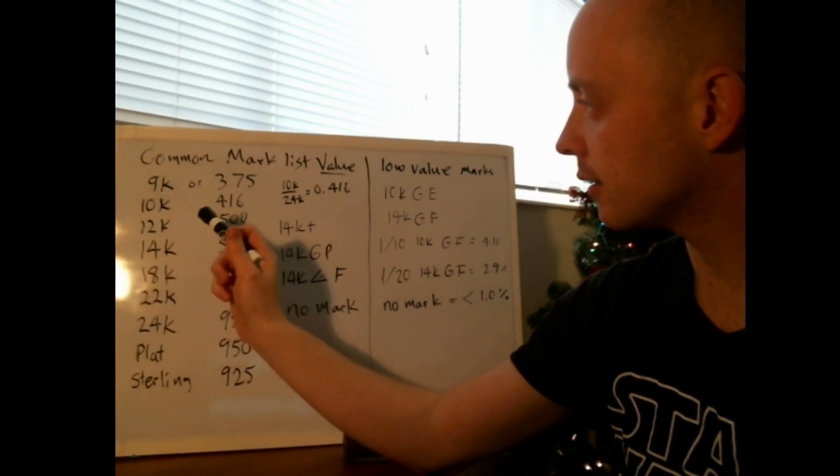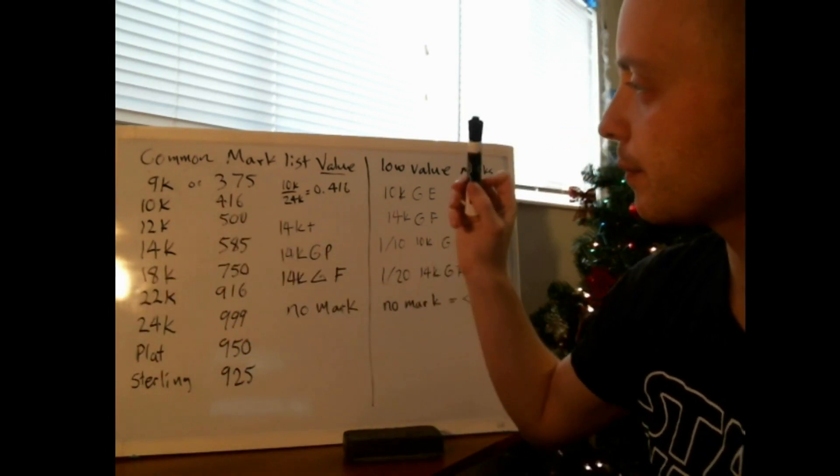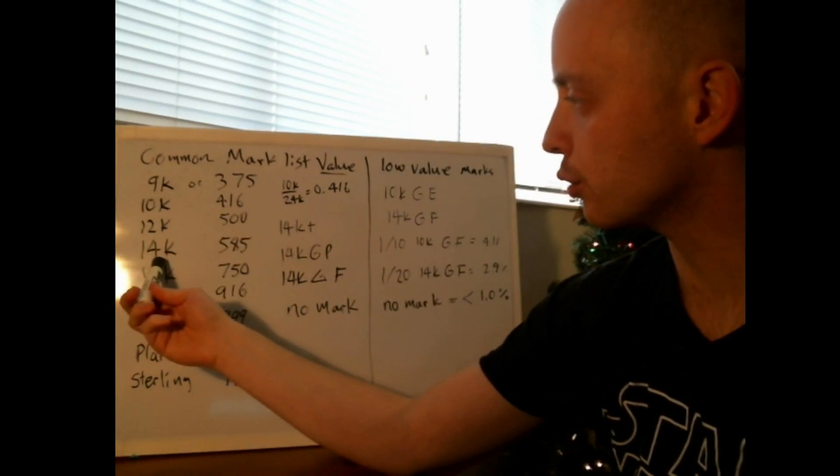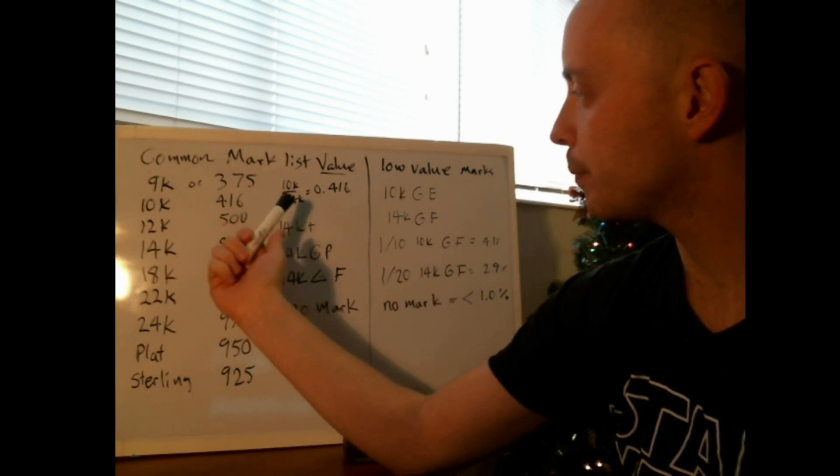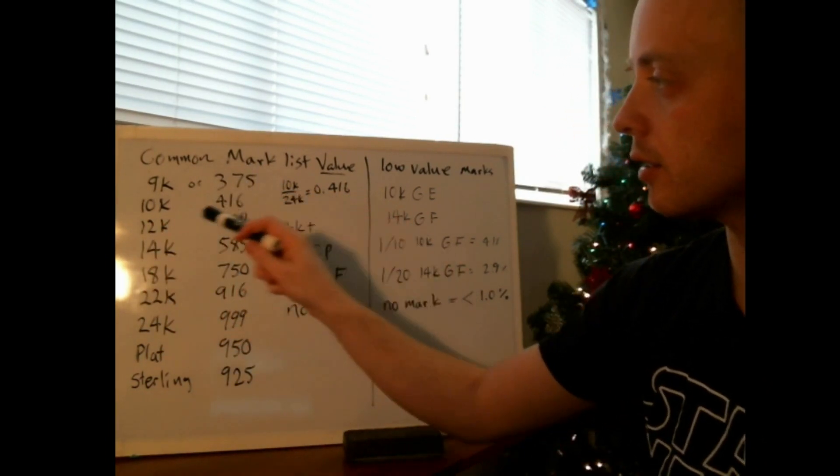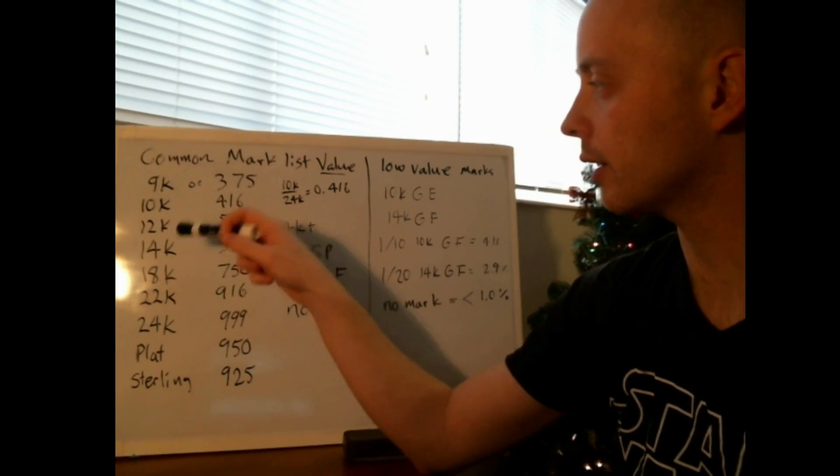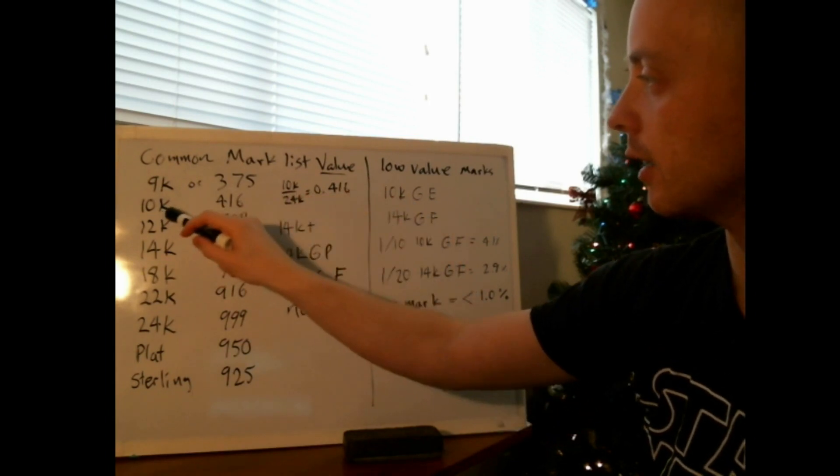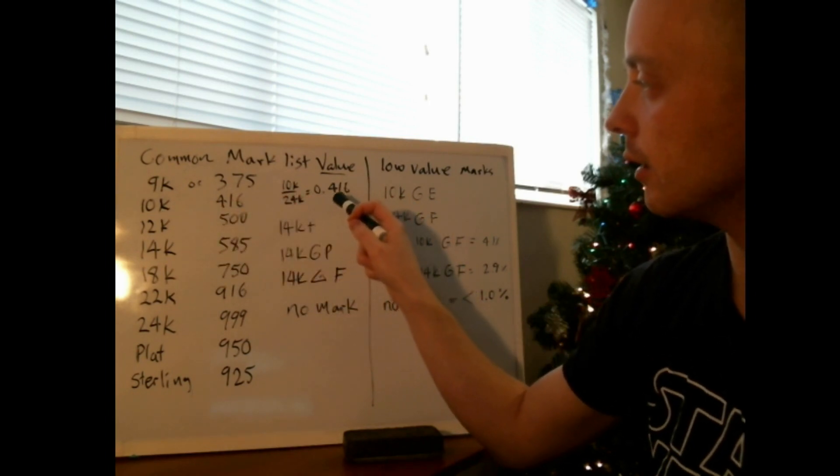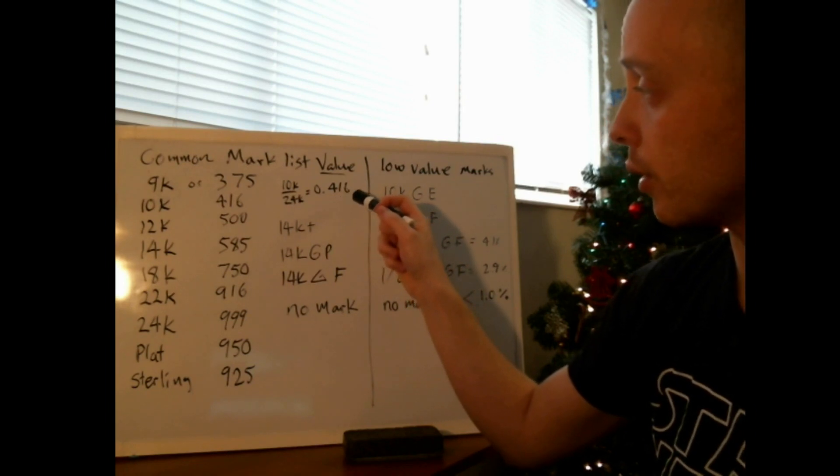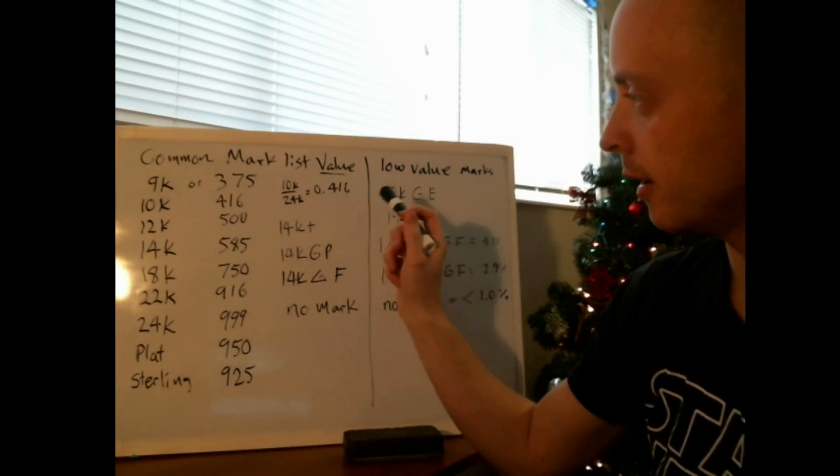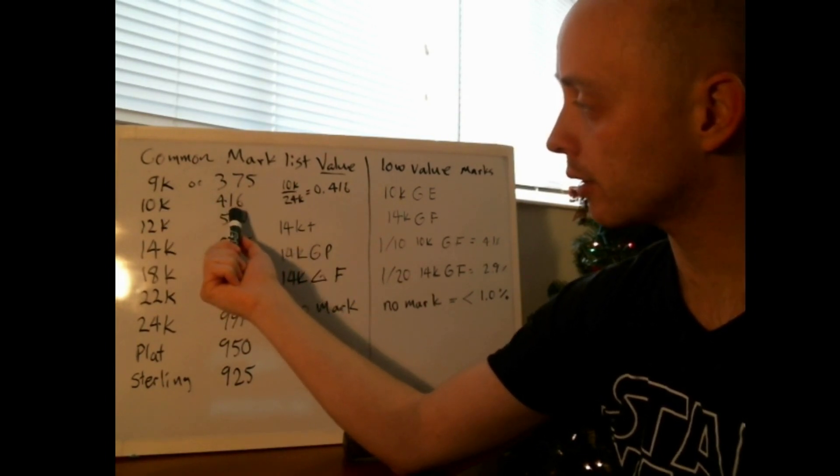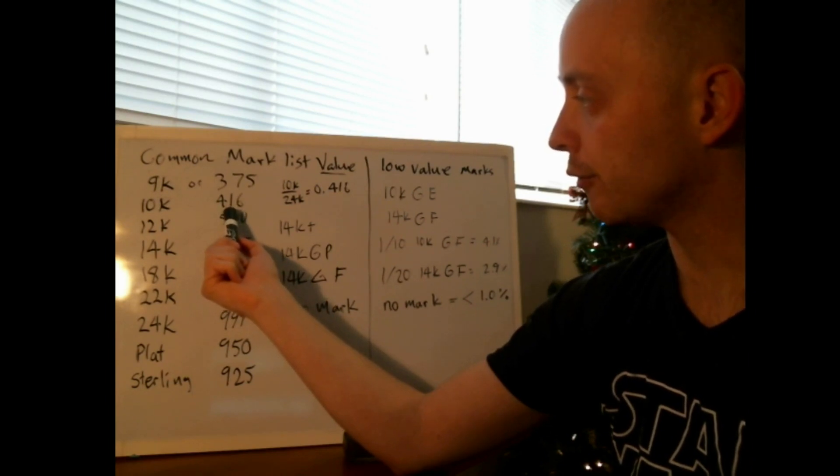Here we've got, you're probably familiar with 10 karat or 14 karat jewelry. To figure out what percentage of gold is in 10 karat or 14 karat jewelry, you take the karat that it is and divide it by 24. In the case of 10 karat, you get a decimal which is essentially 41.6 percent.